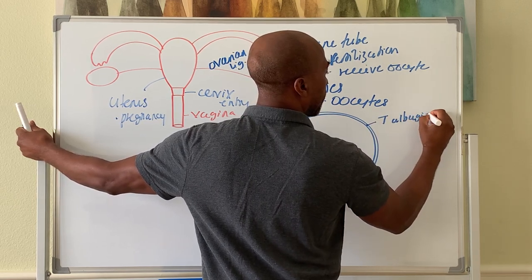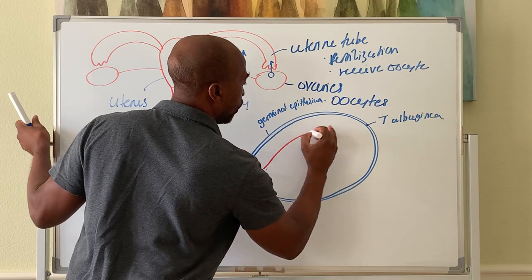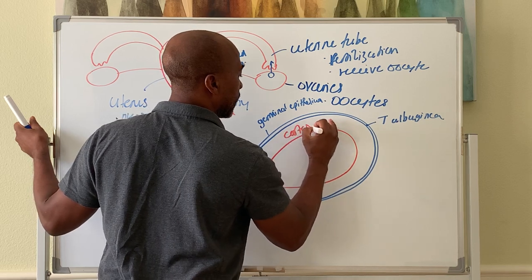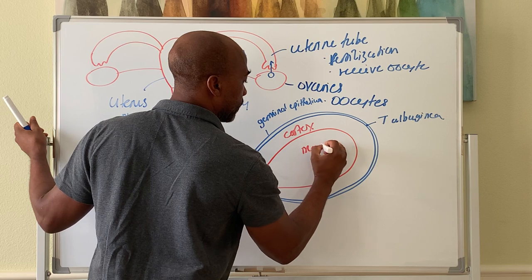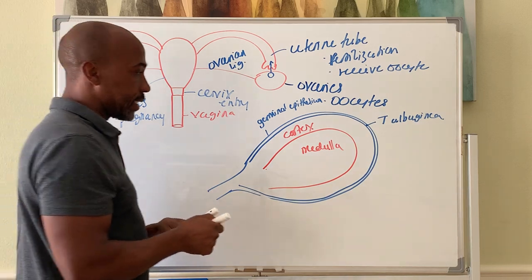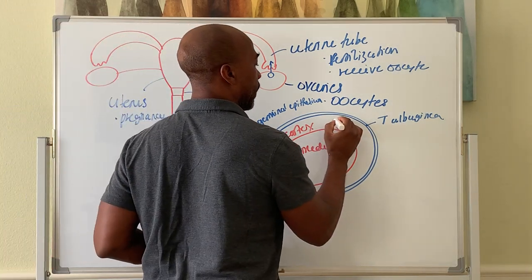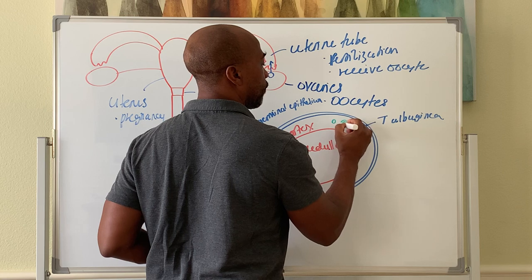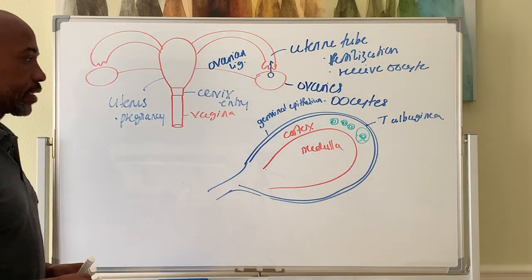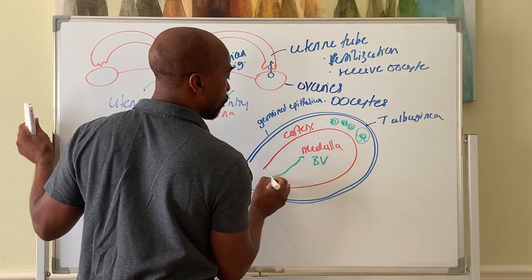You have a bigger region here called the ovarian cortex, and inside here is the medulla of the ovaries. The general rule is that the cortex is where you find your oocytes. So the oocytes are here in follicles. Follicles are found out here in the cortex, and the medulla is where you have your blood vessels and lymph drainage.